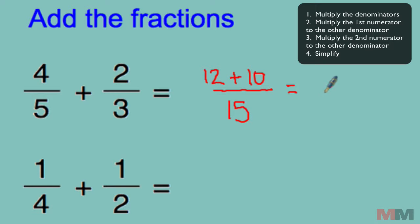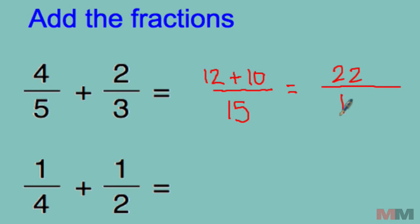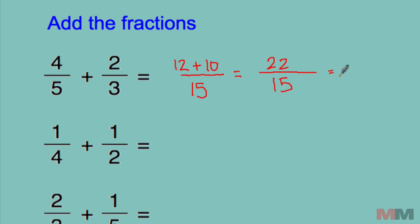From there, just simplify it. So simplify the numerator, 12 plus 10, 22 over 15, and you're done. It's an improper fraction. We can turn that into a mixed number. So that would simplify into 1 and 7 fifteenths. I'll show you how to do that in a separate video if you don't know how.